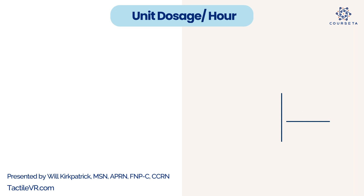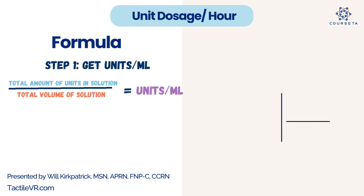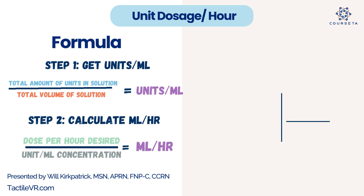Lastly, unit dosage per hour calculation. Step one: get the units per mL using the formula total amount of units in the solution divided by total volume of that solution. Step two: calculate mL per hour using dose per hour desired divided by the units per mL concentration from step one — that gives you mL per hour.